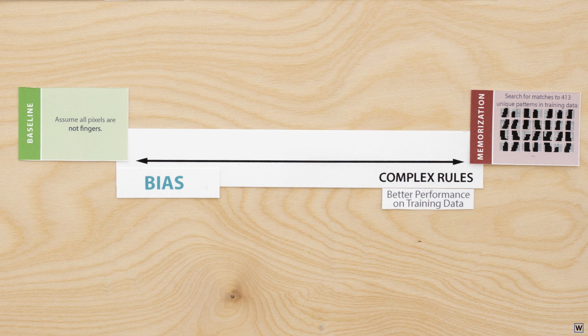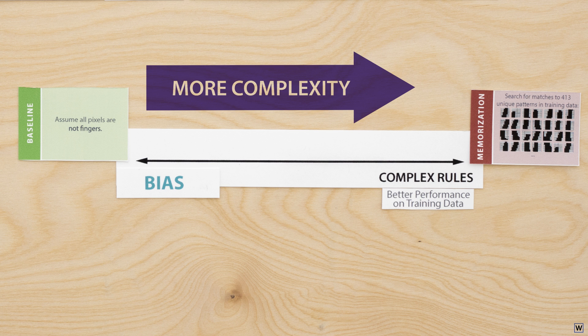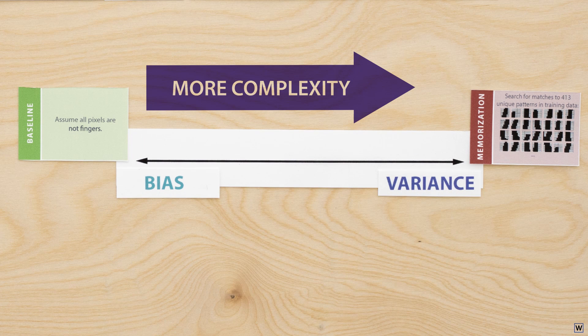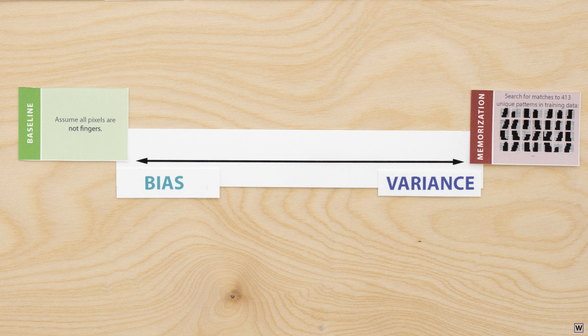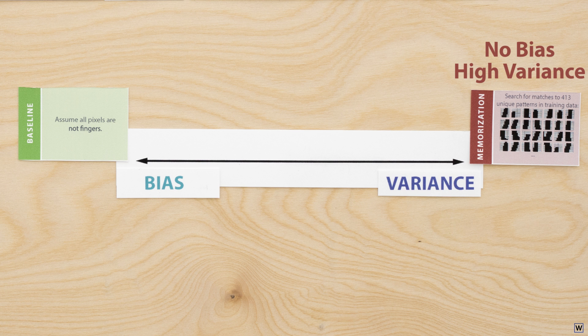As we move to the right, our rules become more complex and less biased. This complexity is often called variance. The variance of our solution increases as we move to the right, reaching a maximum with our memorization strategy. Since this strategy can model any possible data set, it has the most complex set of rules possible, and makes absolutely no assumptions about the form of our solution. So no bias, but very high variance.